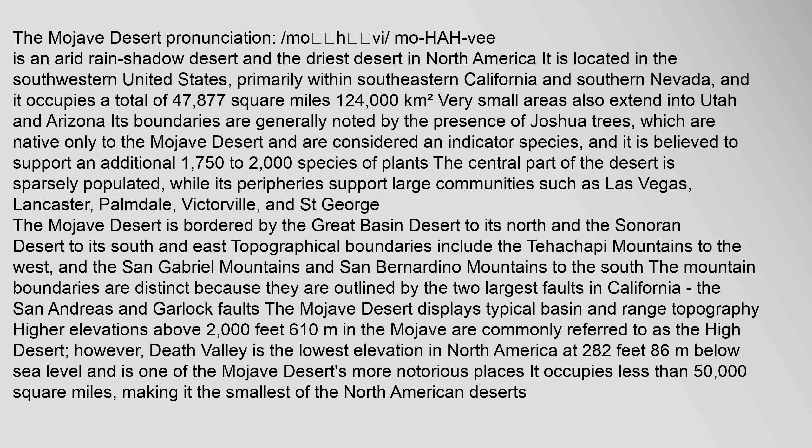The Mojave Desert — pronunciation Mo-Ha-V — is an arid rain shadow desert and the driest desert in North America. It is located in the southwestern United States, primarily within southeastern California and southern Nevada, and it occupies a total of 47,877 square miles (124,000 square kilometers). Very small areas also extend into Utah and Arizona.